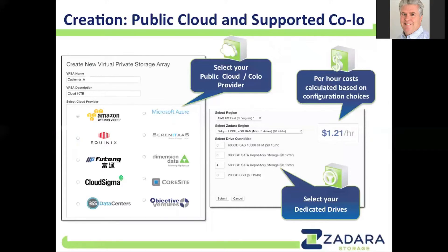When I go to our e-commerce page, I'll select Amazon, select the region — in this case Virginia 1 — and select the type of engine I want. The engines range from Baby, Basic, Boost, Blast, Blazing, and Blazing Plus. Those engines determine how many drives you can support and how many IOPS you'll receive. Here I'm selecting four five-terabyte drives, giving me 10 terabytes net after putting this into a RAID 1 configuration. The cost is based on the hour — $1.21 per hour.